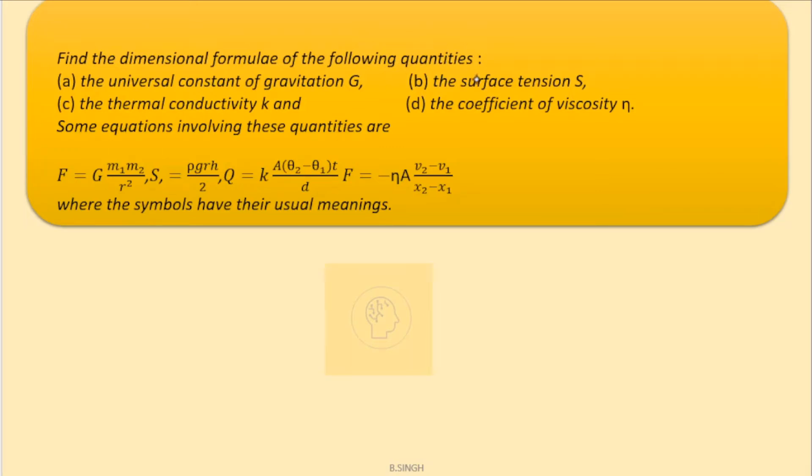The problem says find the dimensional formula of the following quantities and the option D is the coefficient of viscosity eta.